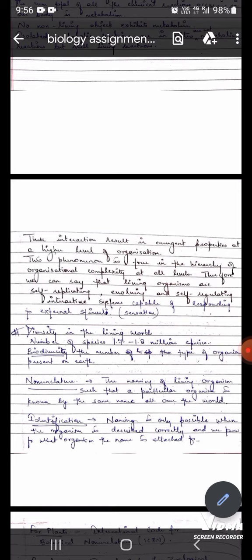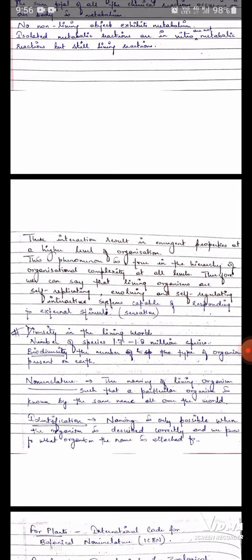Second one is nomenclature. The naming of living organisms such that a particular organism is known by the same name all over the world. If any scientific name is given to an organism, it is called by the same name throughout the world. Identification. Naming is only possible when the organism is described correctly and we know to what organism the name is attached to.